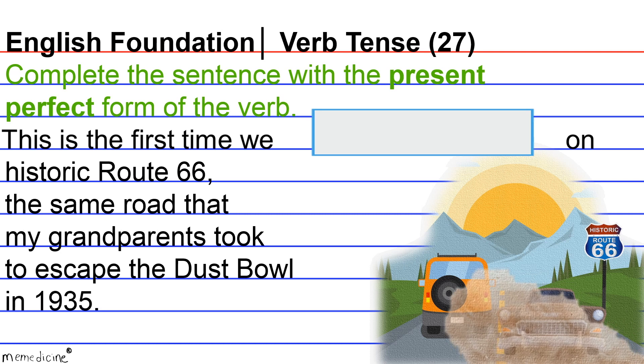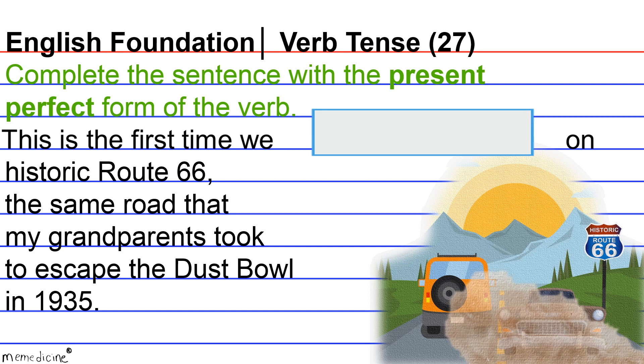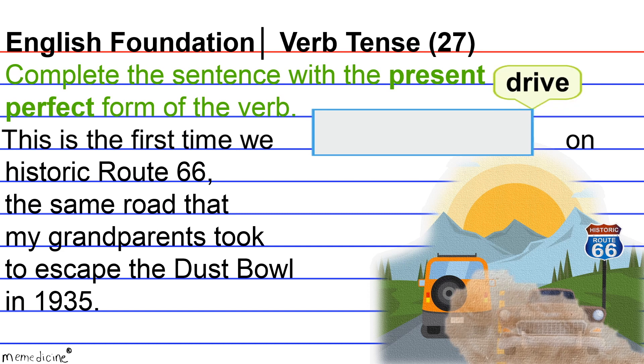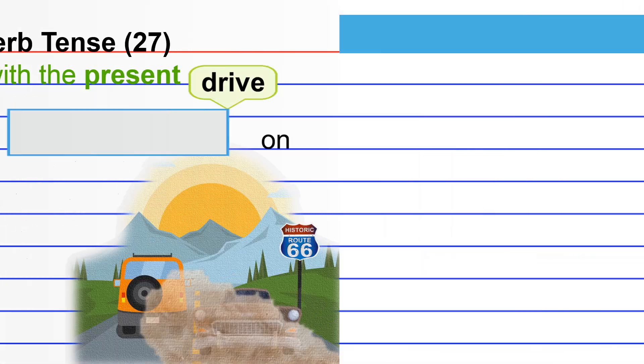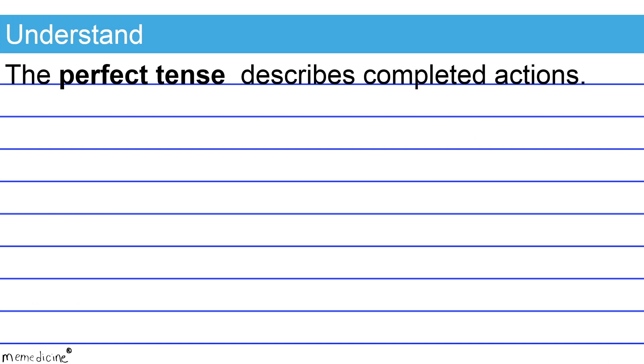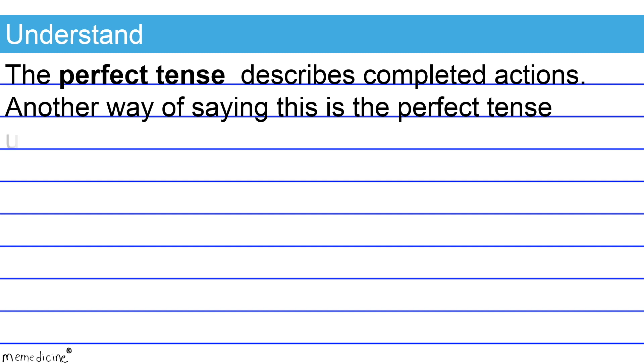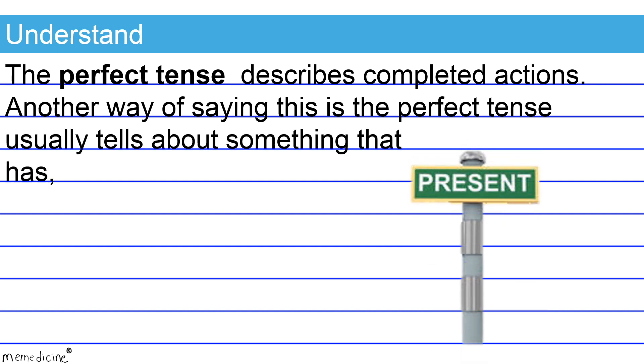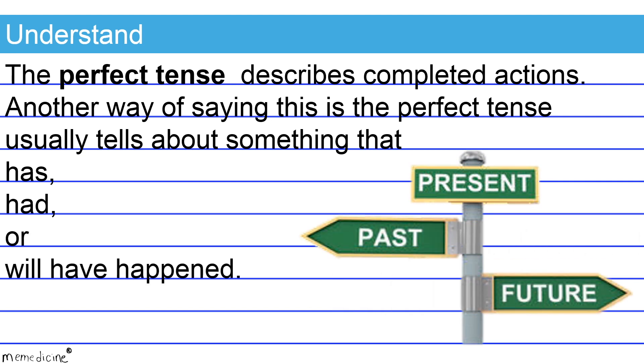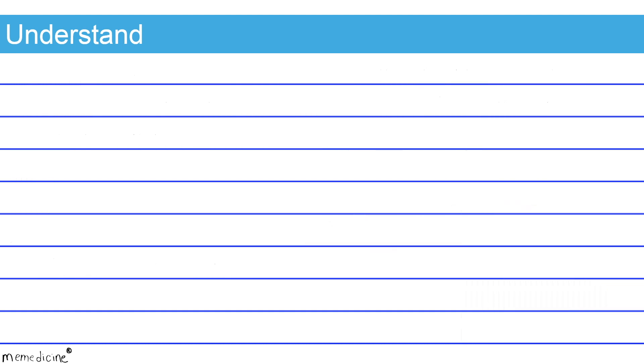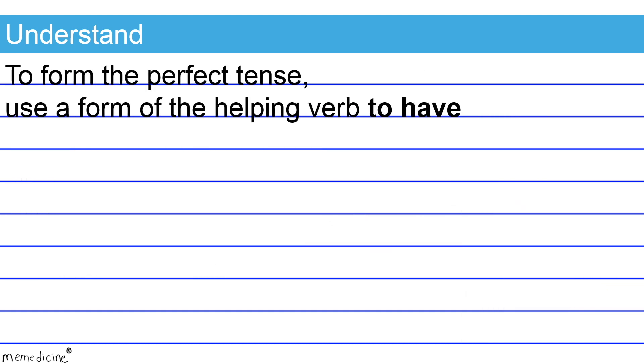The task here is to shift the tense of drive to its present perfect verb form. The perfect tense describes completed actions. Another way of saying this is the perfect tense usually tells about something that has, had, or will have happened. To form the perfect tense, use a form of the helping verb to have with the past participle of the main verb.